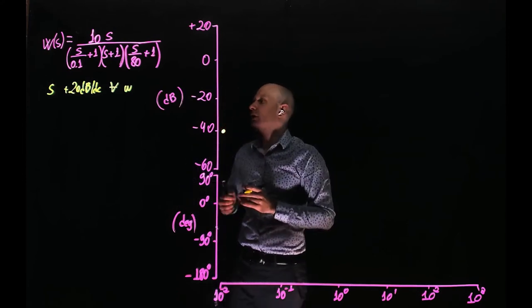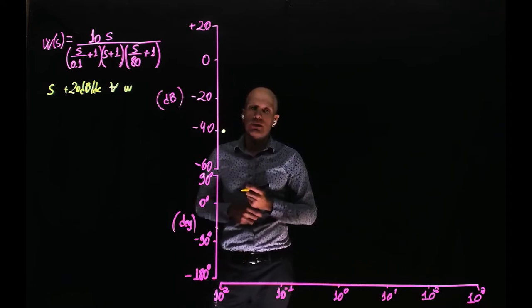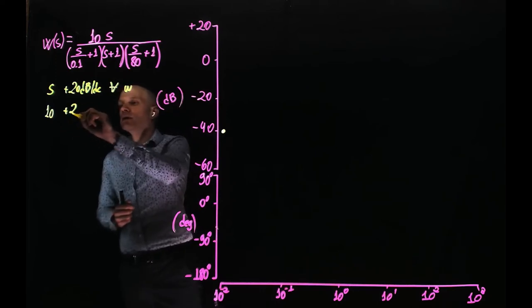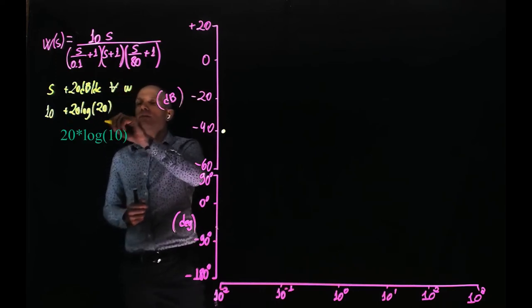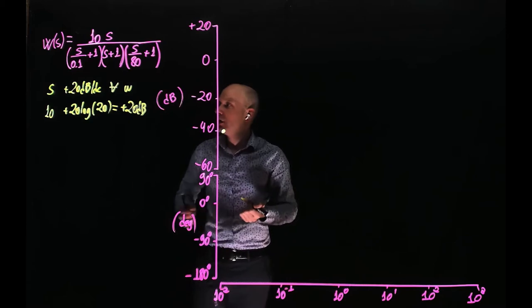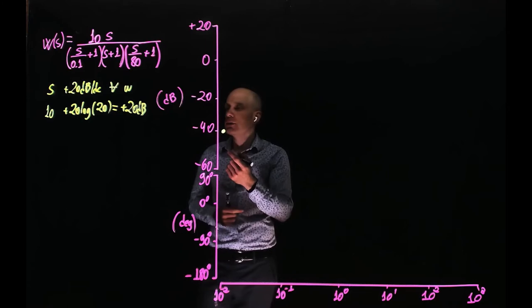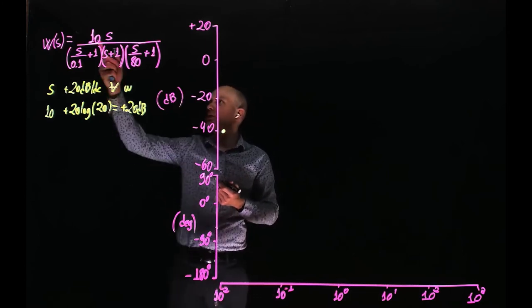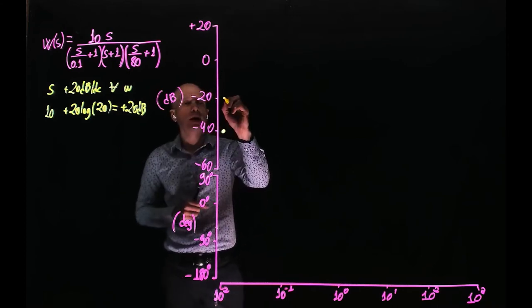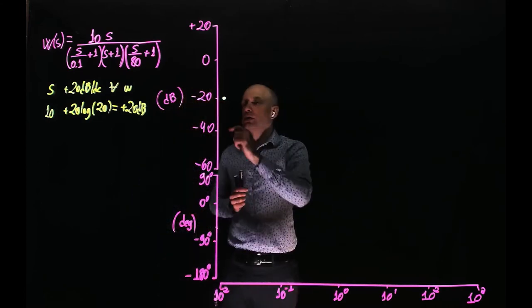It would start at negative 40 dB if we didn't have that gain of 10. That gain of 10 also acts on the Bode plot at low frequencies, and in fact the gain 10 adds plus 20 log of 10 — that is plus 20 dB — everywhere on the Bode plot. So because of the zero at the origin we'd be at negative 40 dB, but we also have this positive 20 dB due to the gain 10. So this shifts up: negative 40 plus 20, we are at negative 20 dB. This is actually where the Bode plot starts.